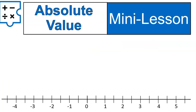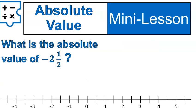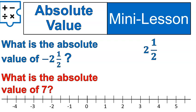With absolute values, if I said what's the absolute value of negative two and a half, you would say positive two and a half. The absolute value of seven is seven. With absolute value it's always a positive answer. If it starts out negative you are switching the sign; if it starts out positive you're keeping the sign the same. Absolute value is always positive.